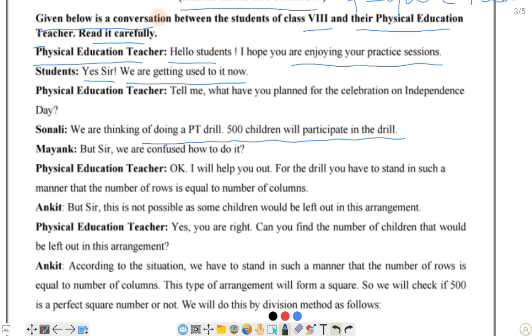Mayank: But sir, we are confused. How to do this in such a manner that the number of rows is equal to number of columns?